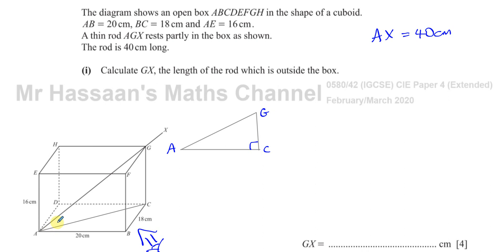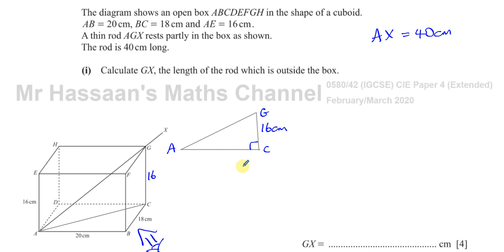In this triangle, we know that CG is 16 centimeters — the height of the cuboid — so this side is 16 centimeters. We don't know AC and we're trying to find AG, so that's not enough on its own to find AG.